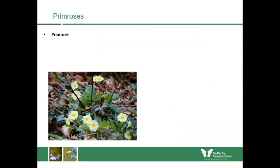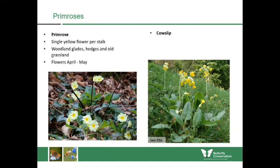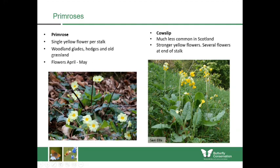Moving to the primrose family — another important early nectar source — to separate the primrose from cultivated garden types, look for a single yellow flower on each stalk. You'll find them in woodland glades, hedges and old grassland, flowering mostly April to May. Its close cousin the cowslip was once quite rare in Scotland but is now being used in seed mixes for road verges. The cowslip has several flowers at the end of the stalk and a much deeper, darker yellow compared to the pale yellow of the primrose.